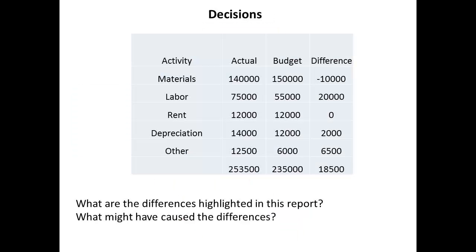A typical report compares actual against the budget set. In this case, the activity is measured in terms of expense on labour, materials, rent, depreciation, and other overheads. Here we can see a saving on materials, possibly caused by a change in price, and overspending on labour and other overheads. The report would explain why there has been a change in materials cost, and why there have been additional labour and overhead costs.